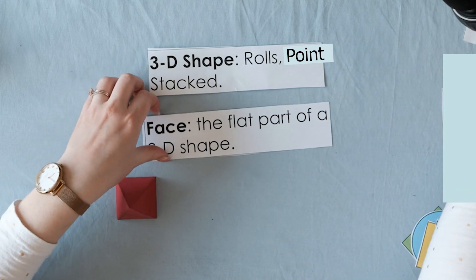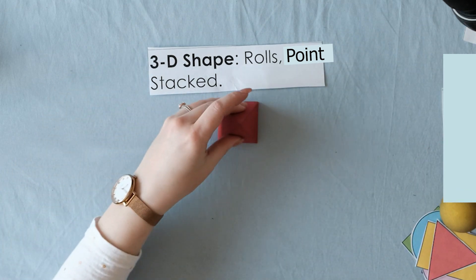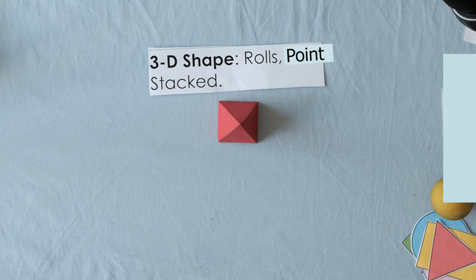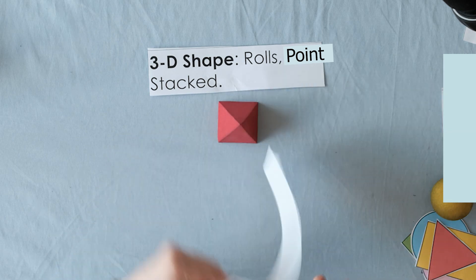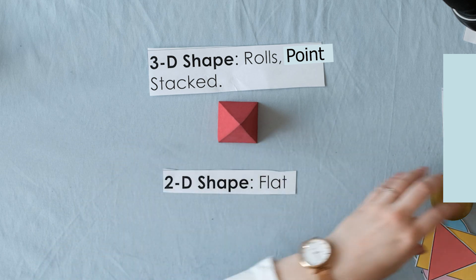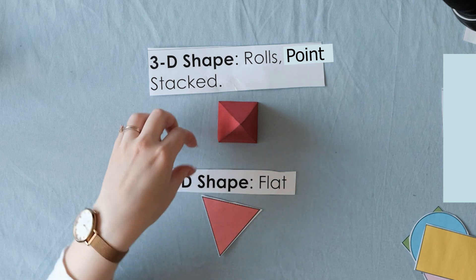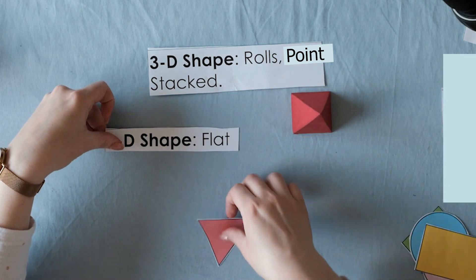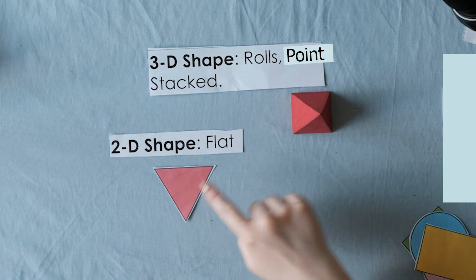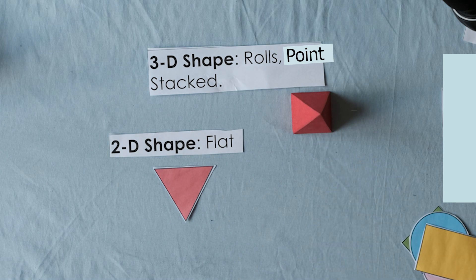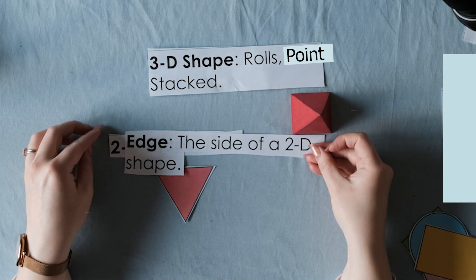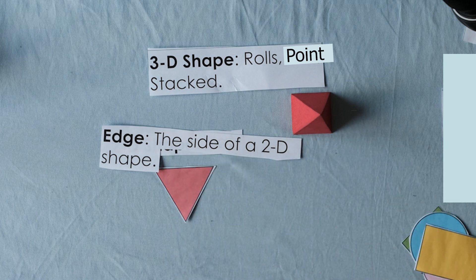So let's review one more time. This is a 3-D shape. It has a face. And this one here is a 2-D shape. It is flat. So 2-D, 3-D and flat shapes also have edges, right? Those edges there.